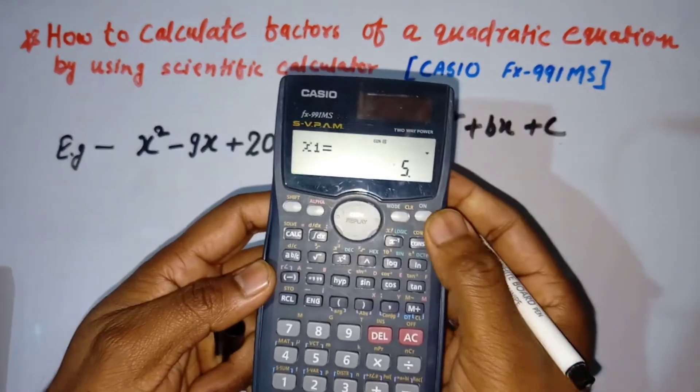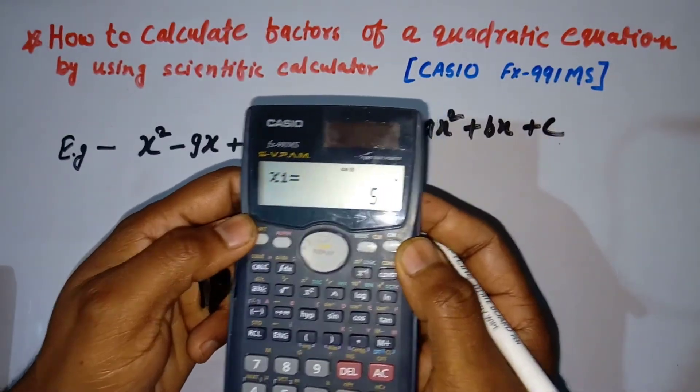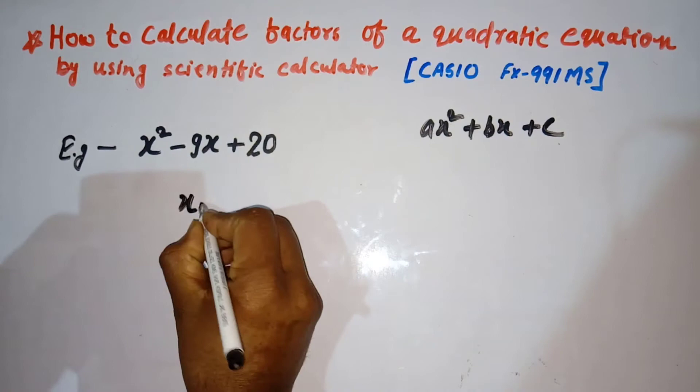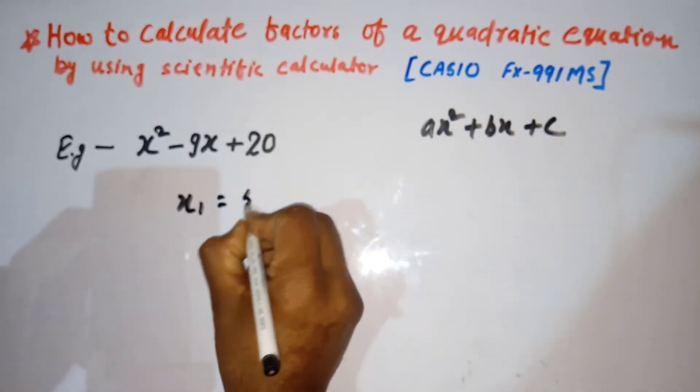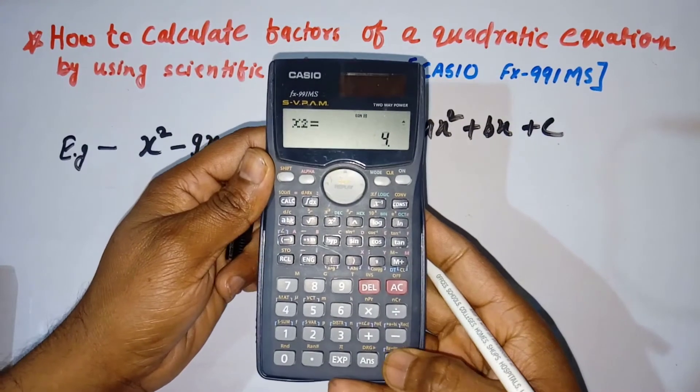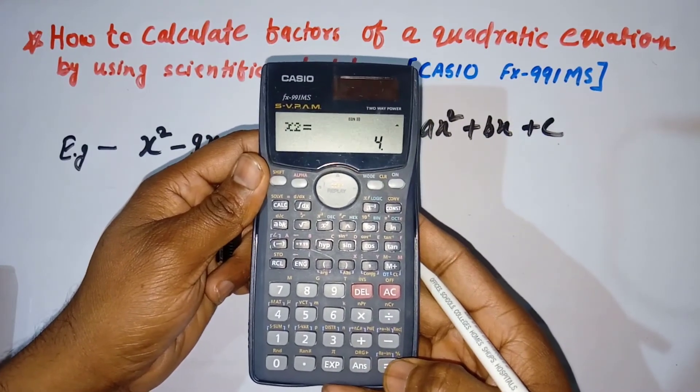The calculator shows x1 is 5, meaning the first factor is 5. Press enter again and you will get the second factor, which is 4.